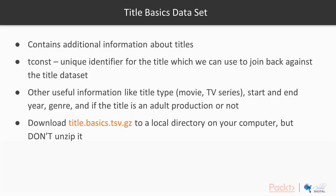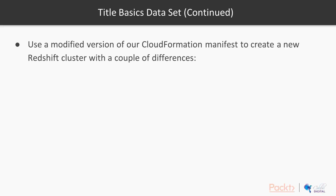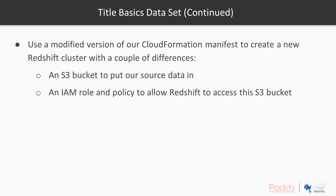Download it to a local directory on your computer, but this time don't unzip it. We're going to demonstrate how you can import a compressed file directly into Redshift, which is useful for saving bandwidth and storage space — and it means if you've already got a compressed dataset, you don't have to worry about decompressing it first. Next, we're going to use a modified version of our CloudFormation manifest to create a new Redshift cluster, but with a couple of differences: first, with an S3 bucket to put our source data in, and second, with an IAM role and policy to allow Redshift to access that bucket.